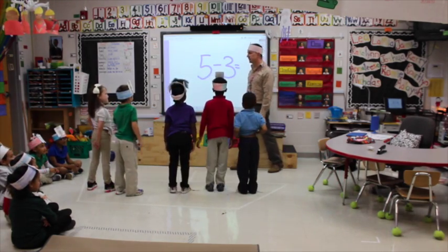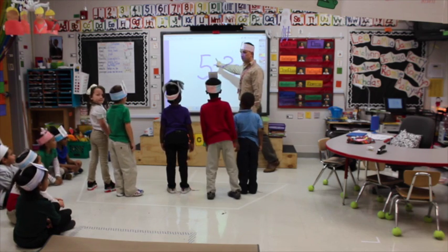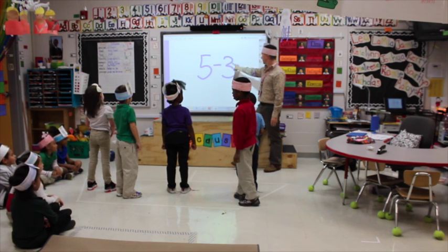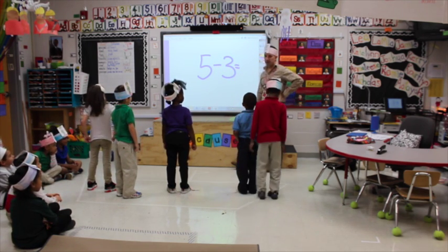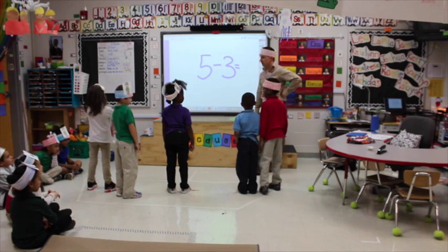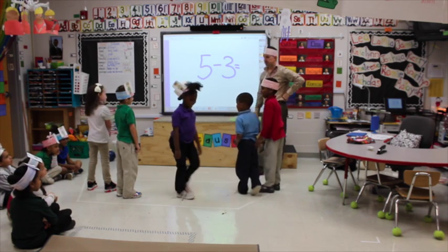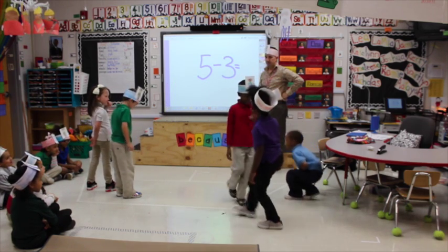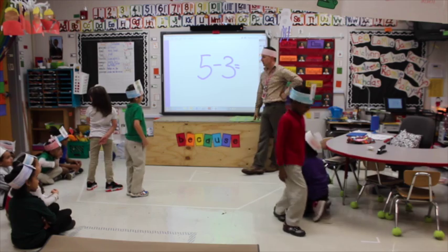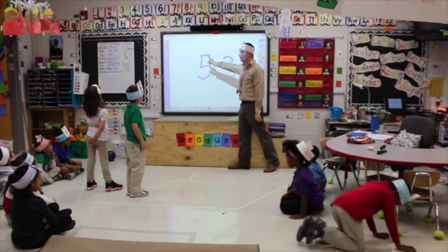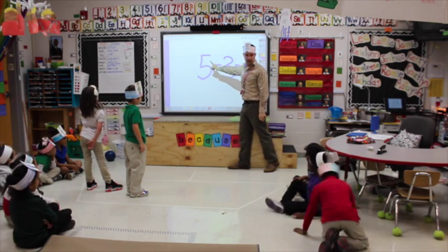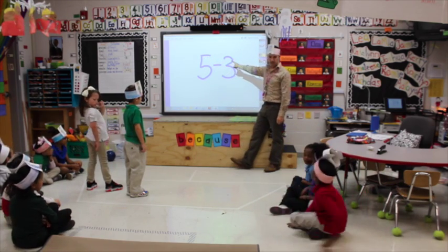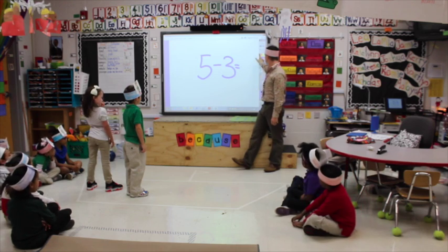Let's read our equation. Five minus three equals... So how many people are getting off my boat? Three. One, two, three — get off my boat. How many are left? Two. Everybody: five minus three equals two.